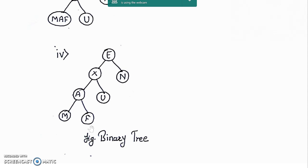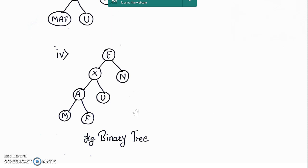To check whether the designed tree is correct or not, we traverse this tree in post-order and in-order fashion. After traversing, if we get the same sequence as mentioned in the problem, then we can say that the given tree is correct; otherwise it is wrong.